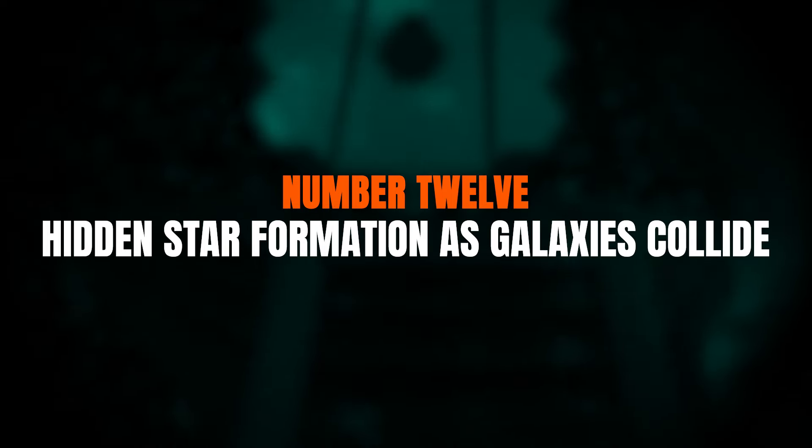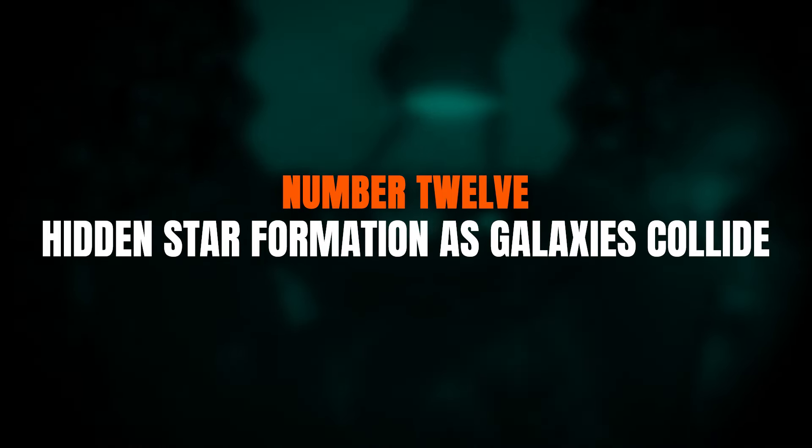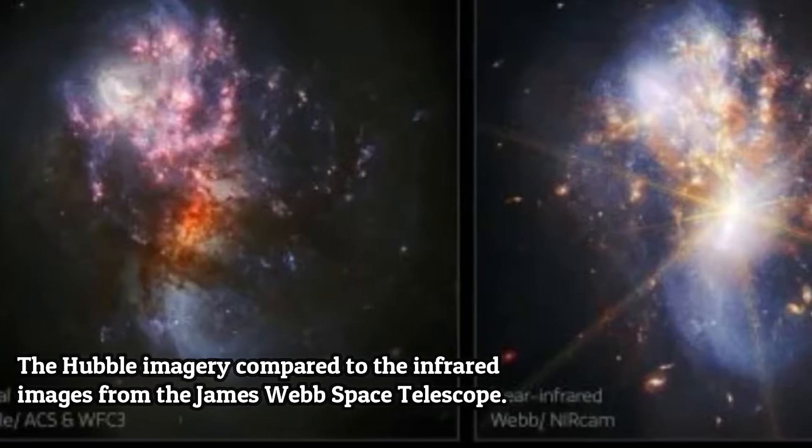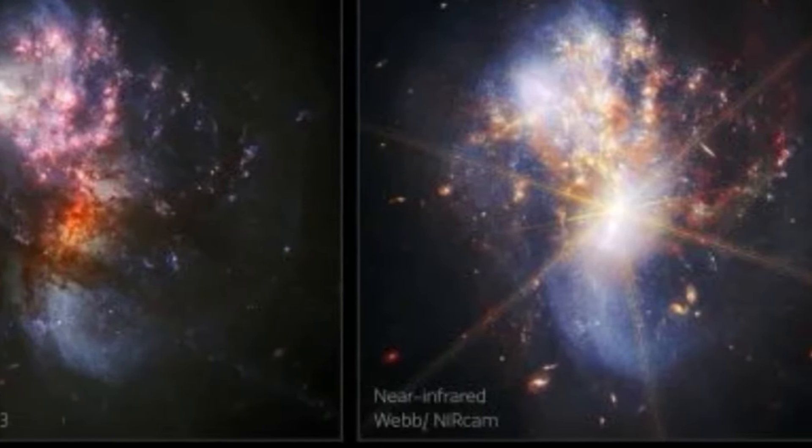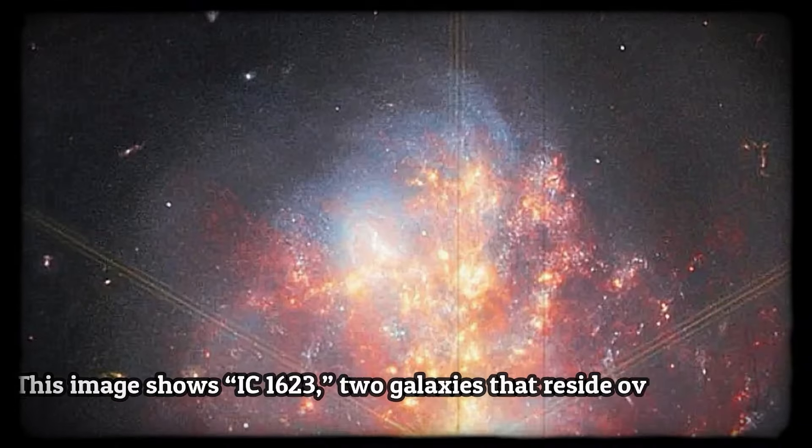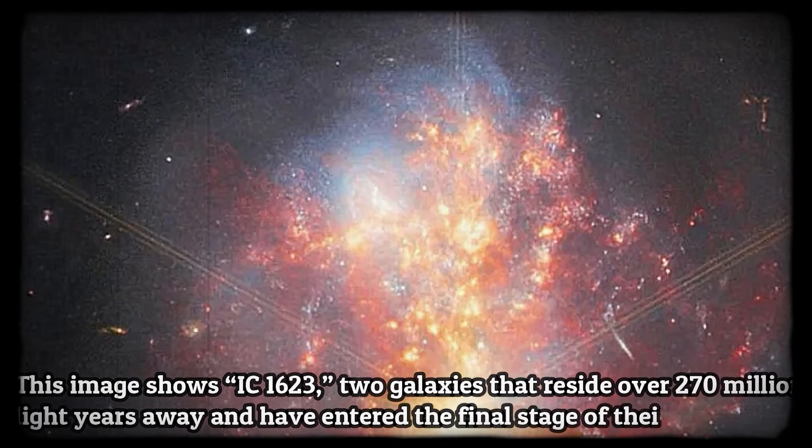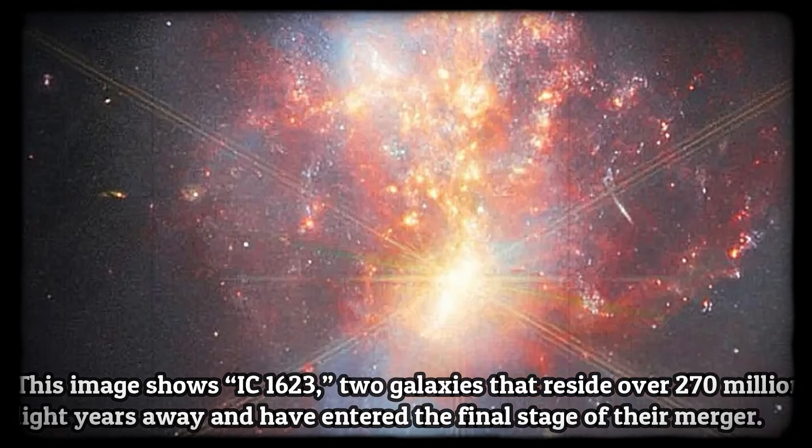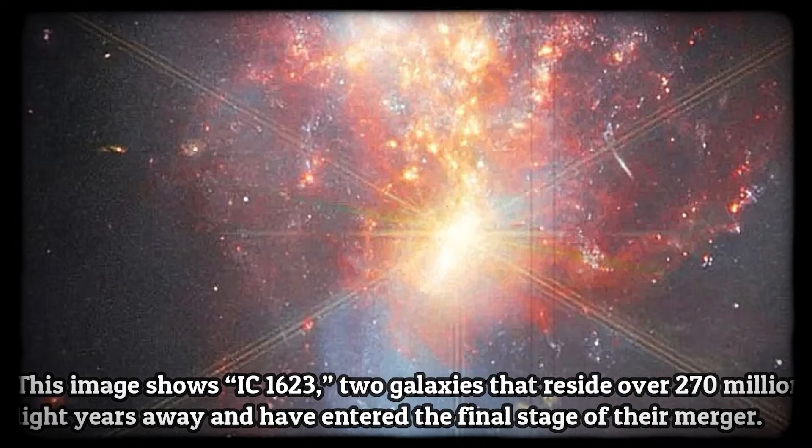Number 12. Hidden star formation. As galaxies collide, unlike telescopes like Hubble, which rely on visible light, Webb is able to harness the power of infrared to penetrate cosmic dust and reveal celestial secrets. Recently, the James Webb telescope captured a striking image of two galaxies locked in a cosmic dance known as IC 1623. What Webb saw astonished scientists. Nestled within this collision were regions of intense star formation, blazing with activity unseen by Hubble.